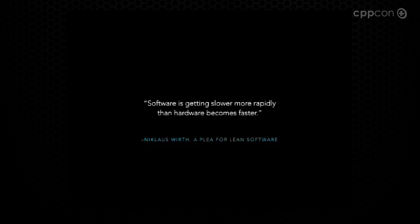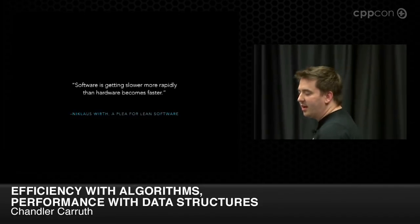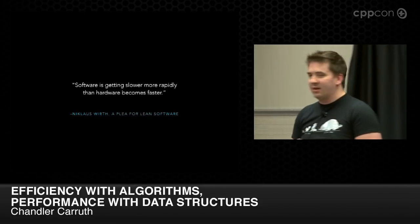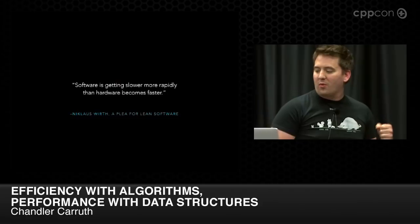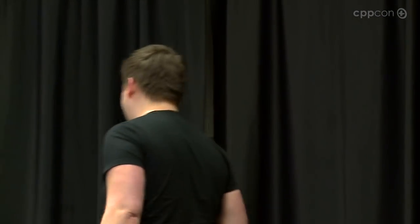We actually need to understand why we care about performance in C++ before we just decide it's important. I'm going to tell you why I care. Most of it comes down to a quote from Nicholas Wirth: software is getting slower more rapidly than hardware becomes faster. This is in contrast to the normal Moore's law thinking — that hardware is getting faster all the time, so we don't need to make software faster. It turns out that's not really true. We're really good at writing slow software. Even in C++, it's hard to write fast software and it takes a lot of effort.